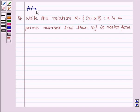Hi and welcome to the session. I am Asha and I am going to help you with the following question which says: Write the relation R having ordered pairs (x, x³) such that x is a prime number less than 10 in roster form.